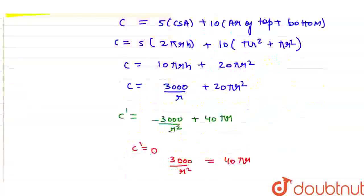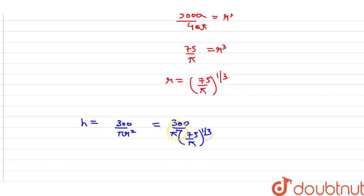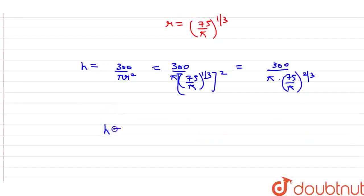Now we substitute this r value into the height formula. h = 300/(πr²) = 300 / (π × (75/π)^(2/3)). Multiplying powers, this becomes h = 300 / (π × (75/π)^(2/3)). We simplify by handling the pi terms carefully.